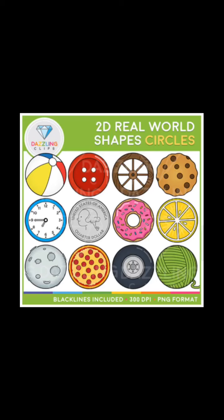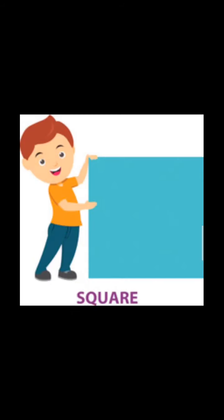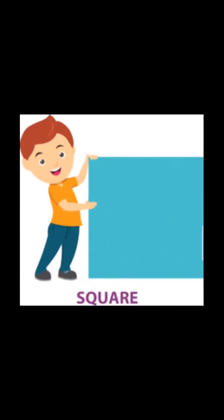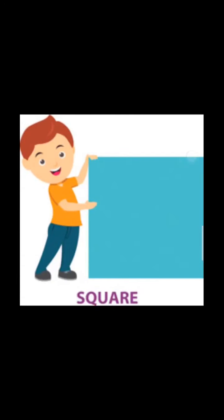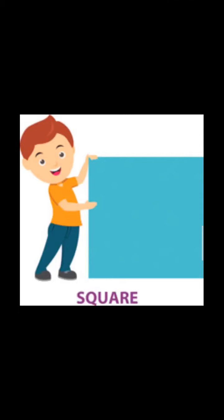Now the next shape is square. This is the shape square. You can see the shape square is having four sides — one, two, three, four — and all the four sides are equal. Now look at the objects related to the shape square.